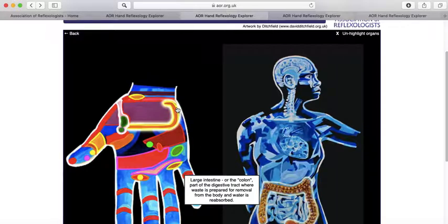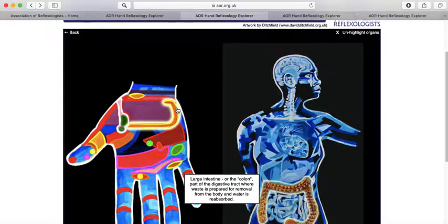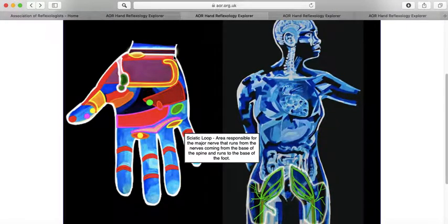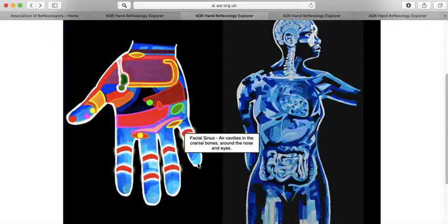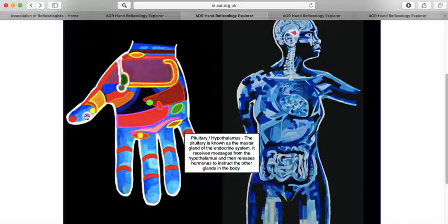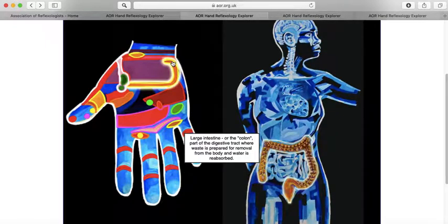And we will start with the ascending and transverse colon. So you start where the wrist is. And the main thing to remember is when you are doing the right hand, the direction of your stroke, so your finger walking, is from the fifth finger to the thumb. So if you can remember that, that will just help you with the actual exercises. So just stroke or finger walk or small little circles just alongside the ascending colon and the transverse colon.